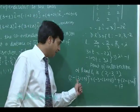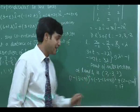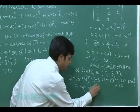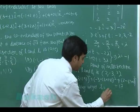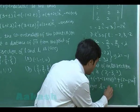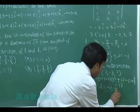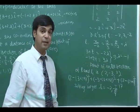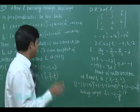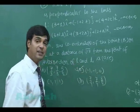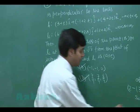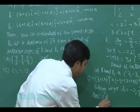Solving this distance equation gives s = −2 and s = −10/9. Substituting s = −2: point is (3−4, 3−4, 2−2) = (−1, −1, 0). Substituting s = −10/9: point is (7/9, 7/9, 8/9). So the correct answers are B and D.